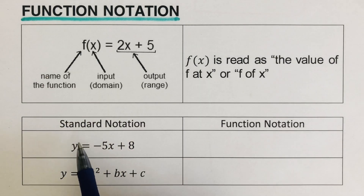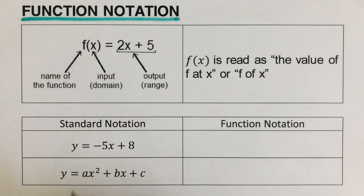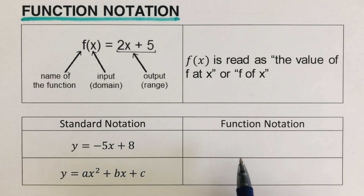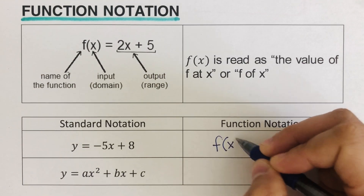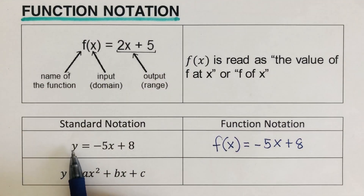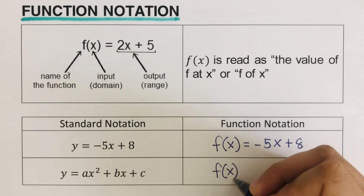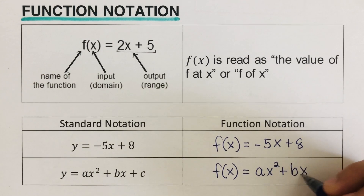Now let's have some examples. We are given a standard notation and we're supposed to change it to its equivalent function notation. In a function, we're given an equation in standard notation and we just have to change the y into f of x. So we can rewrite this as f of x is equal to negative 5x plus 8 — just change the y to f of x. So this one right here would be f of x is equal to ax squared plus bx plus c.